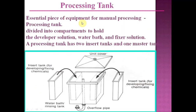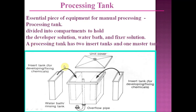The processing tank is an essential piece of equipment for manual processing. It is divided into compartments to hold the developer solution, the water bath, and the fixer solution. The processing tank has two insert tanks and one master tank. The developer solution and fixer are replenished frequently; there is also a water bath, a cover, and an outflow pipe.